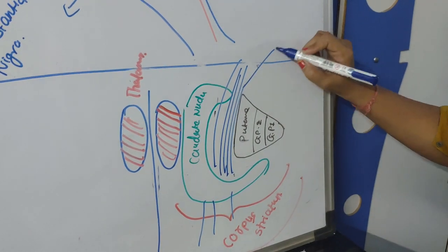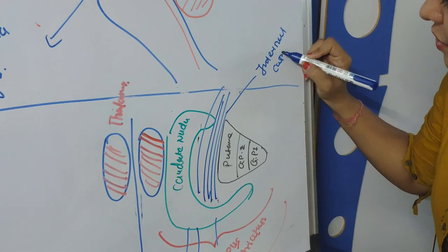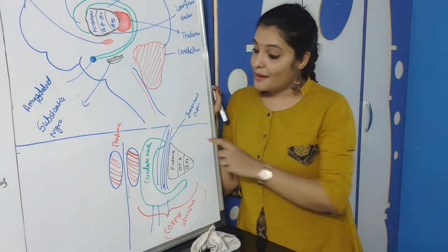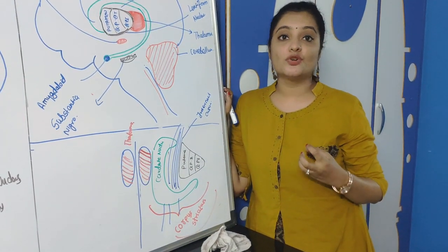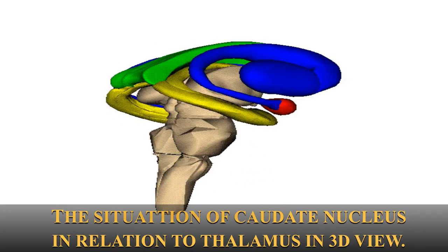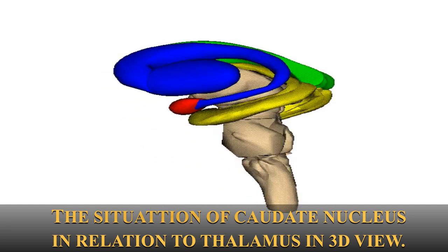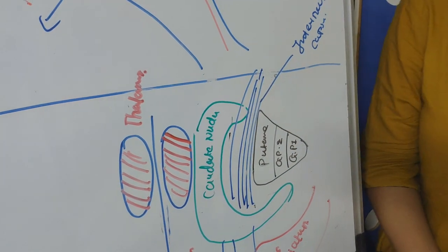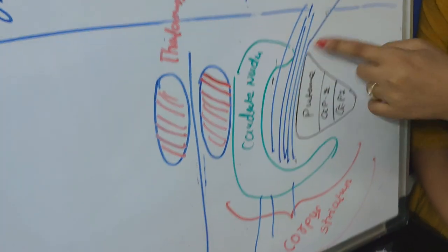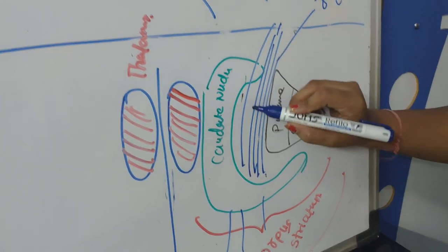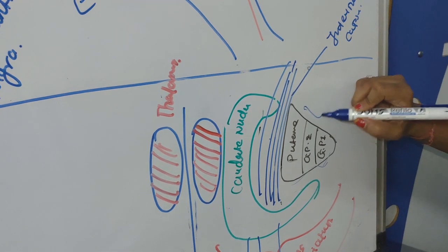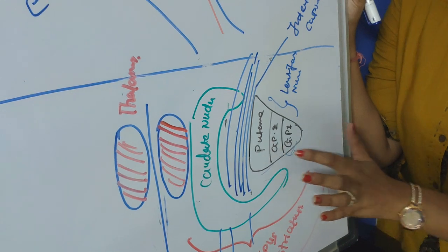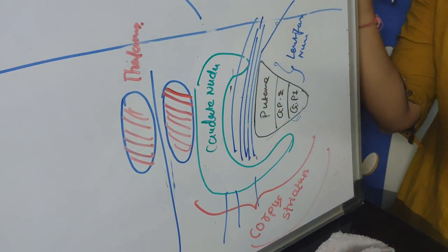So Caudate Nucleus is now a separate part, got separated from the Lentiform Nucleus by the Internal Capsule. The Lentiform Nucleus contains Putamen, Globus Pallidus Externa, and Globus Pallidus Interna. This Internal Capsule is totally a bundle of axonal fibers made up of white matter, consisting of fibers of both ascending and descending tracts. Just lateral to Internal Capsule is the Lentiform group or nuclei.